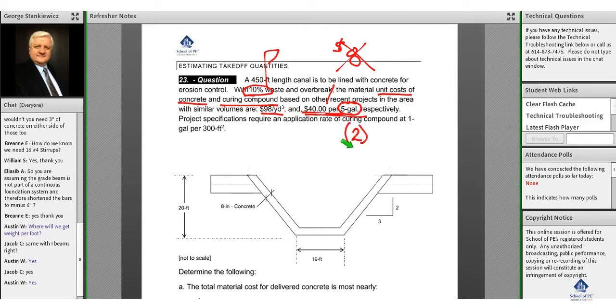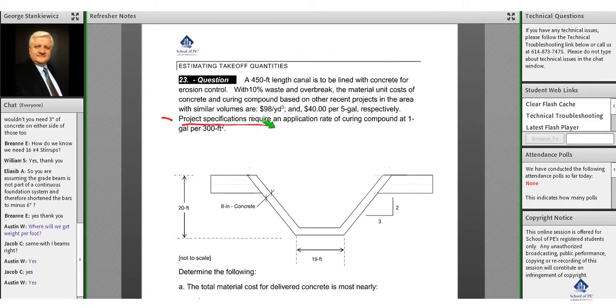Be very careful with this - in estimating, rounding is mathematical rounding. Next, the last sentence: project specifications require an application rate of curing compound of one gallon per 300 square feet.